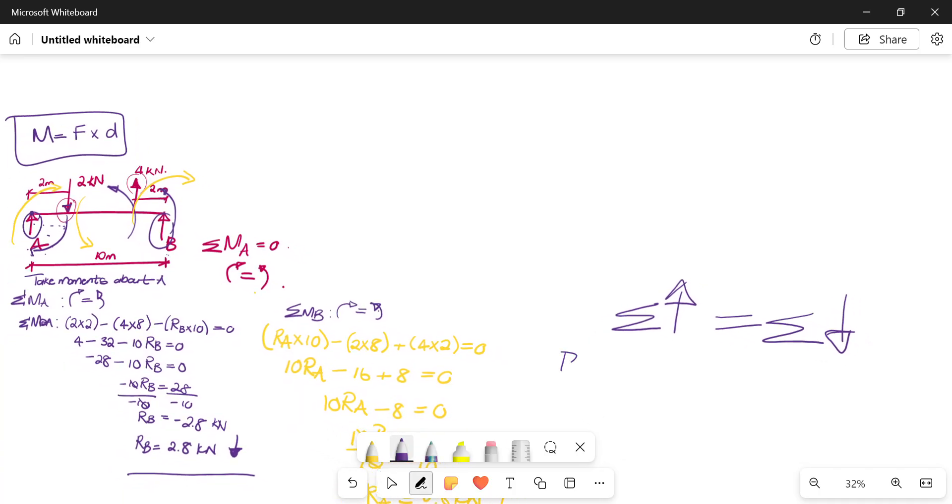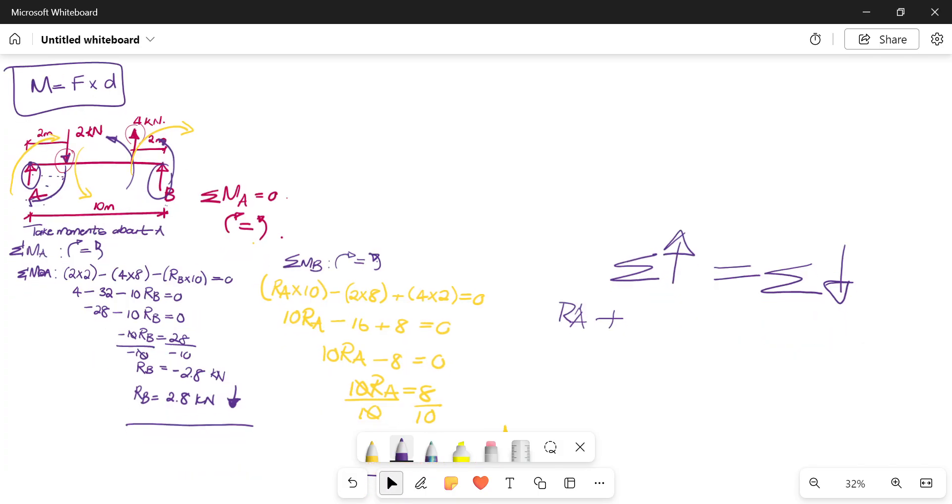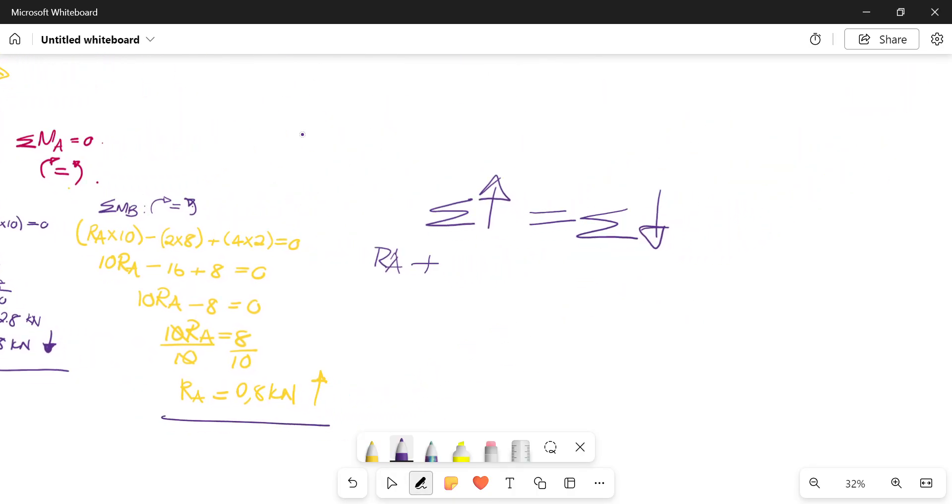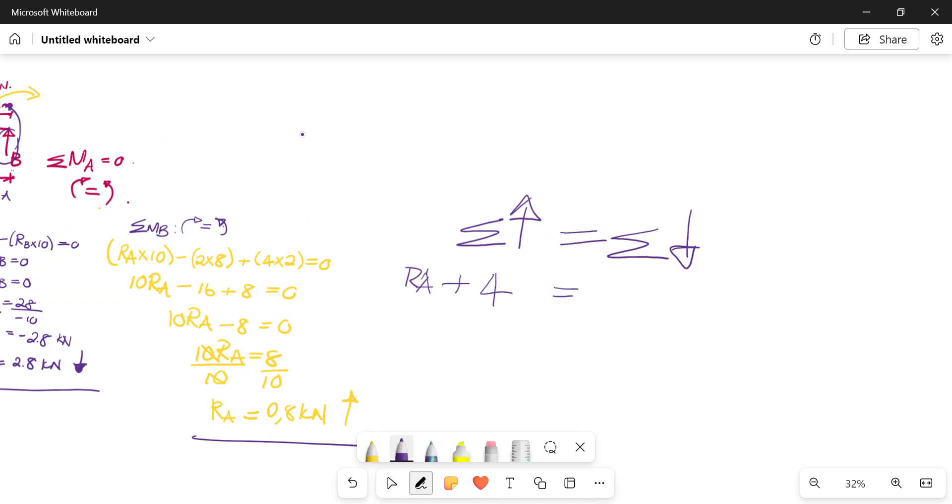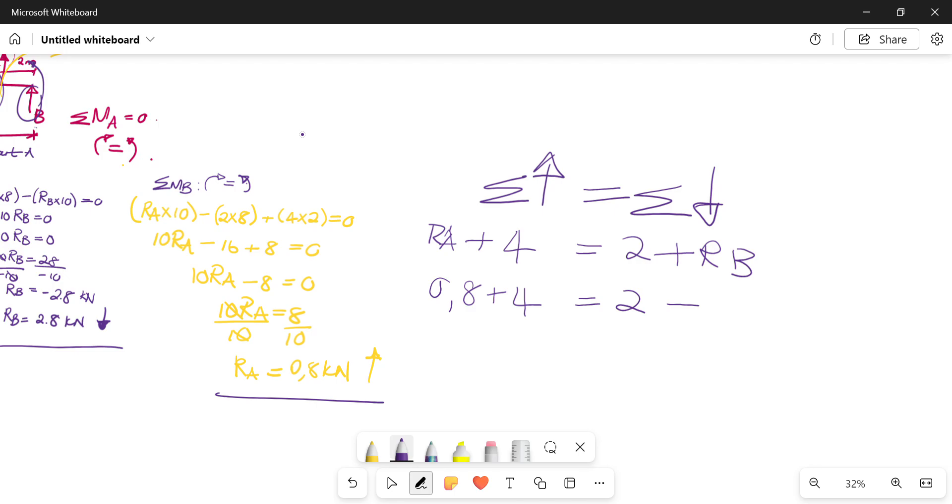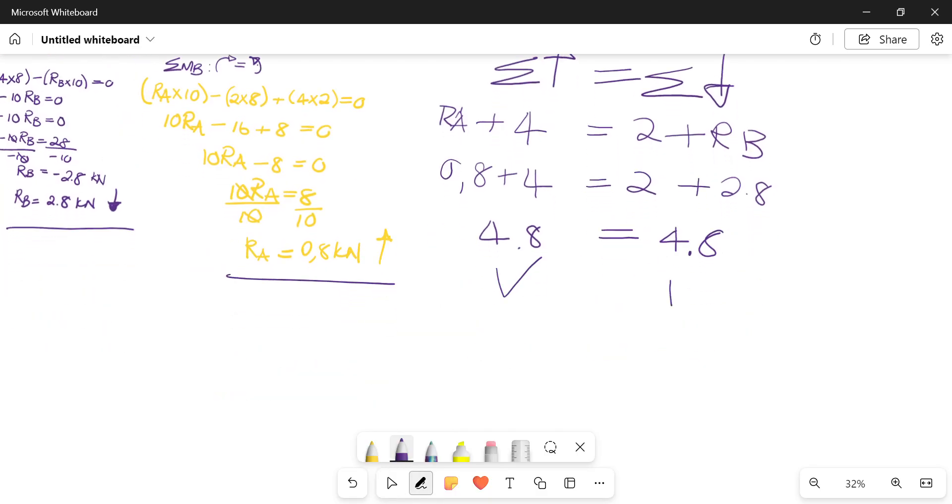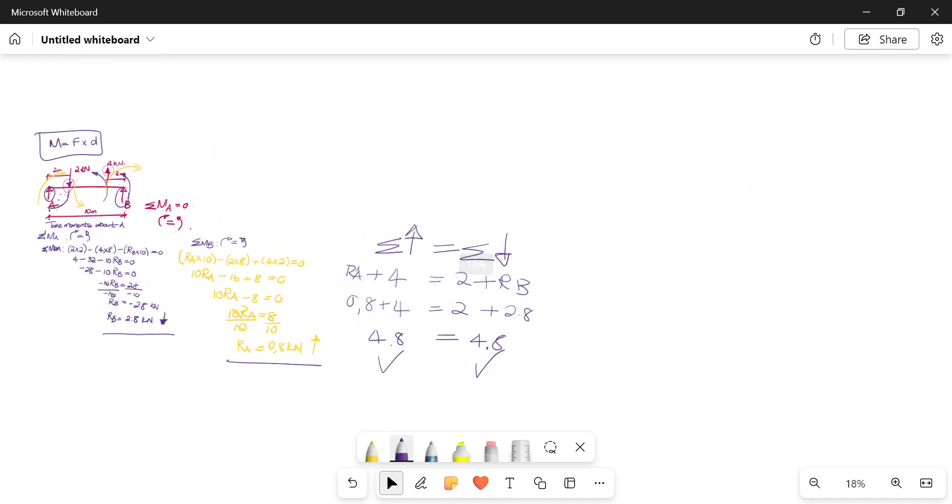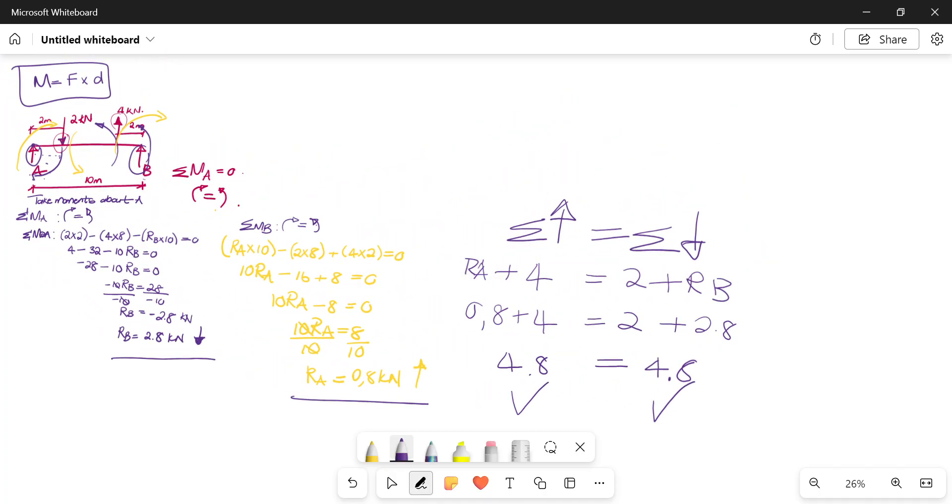Right? So our upward forces, we have RA plus 4. Our downward forces, we have 2 plus RB. So our RA was 0.8 plus 4. 2 plus, our RB was 2.8. 4.8 kilonewtons is equals to 4.8 kilonewtons. Then it means our system passes. And essentially it means the method we have adopted to try and calculate our reactions using moments at points A and B respectively, it means we're on the right track and we've done it correctly.